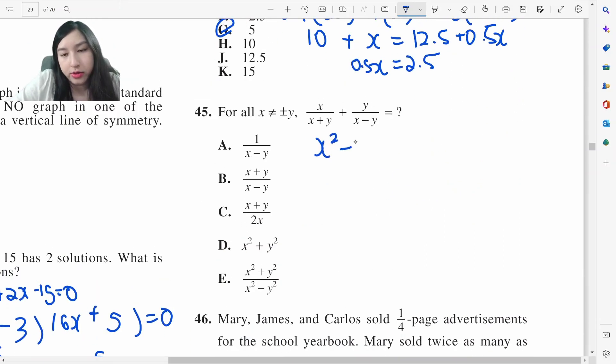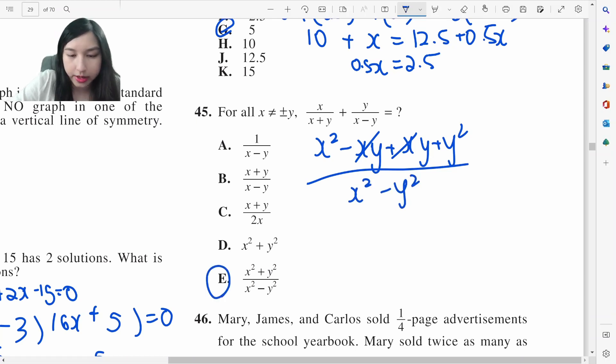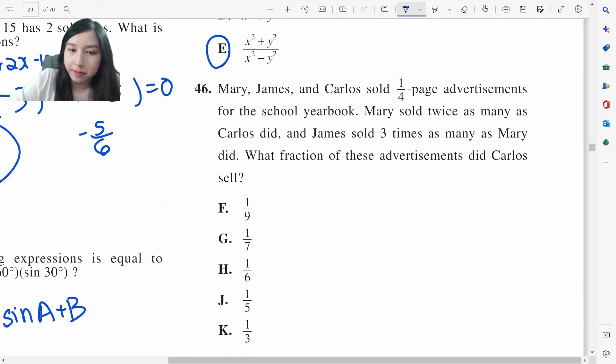They want us to combine the fraction. So x squared minus xy plus xy plus y squared cross cross over difference of square x squared minus y squared, E. Mary, James and Carlos sold this. Mary sold twice as much as Carlos. James sold three times as much as Mary. So who sold the least? Mary sold twice as many as Carlos. So Carlos sold the least. We'll say Carlos is x. Mary sold twice as many, 2x. James sold three times as many as Mary, 6x. So Carlos is x over 9x total. So it's going to be 1 ninth.